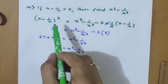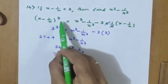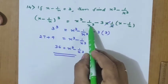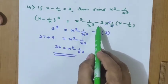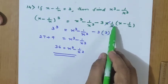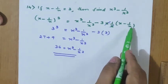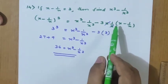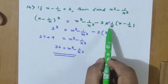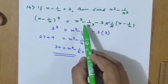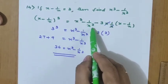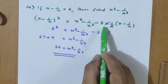The expansion of (x − 1/x)³ is x³ − 1/x³ − 3 · x · (1/x) · (x − 1/x). That is the expansion — we are using the second formula only for this one.